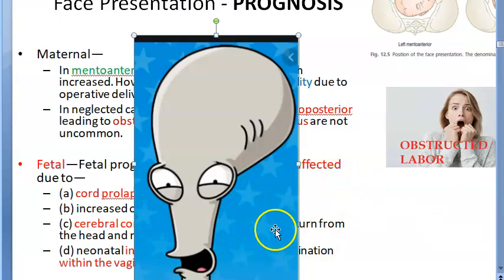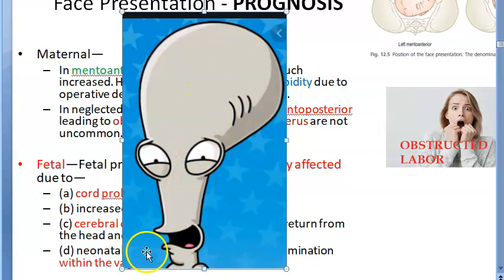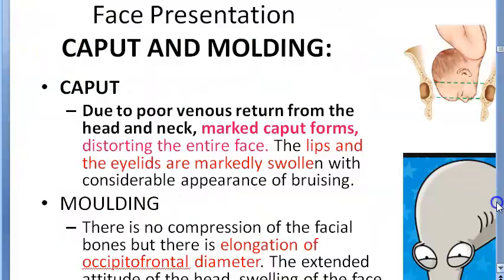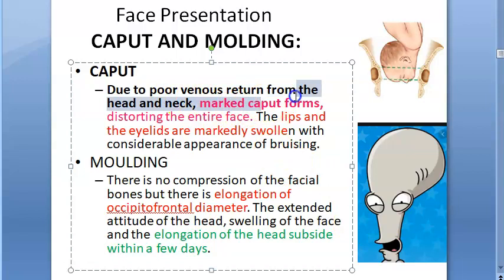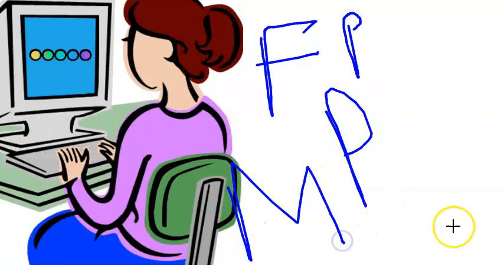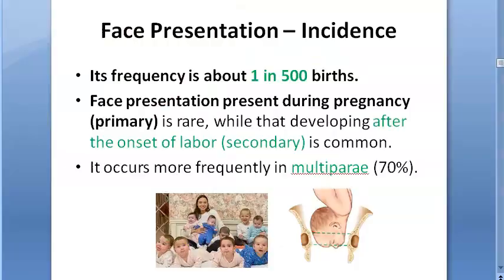For fetal prognosis - if you see a baby with eyelids and lips swollen and the head elongated, that was likely a face presentation. There could be cord prolapse, increased operative delivery, cerebral congestion, and infection. There could be caput and molding - caput forms distorting the entire face, eyelids and lips will be swollen. With molding, there is no compression of facial bones but there is elongation of the occipitofrontal diameter. After some days, these changes will subside.